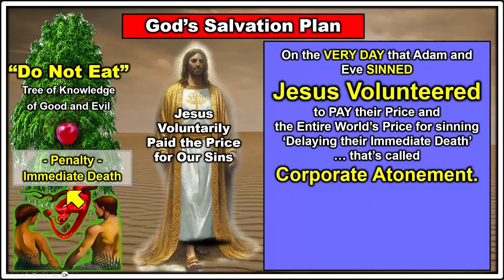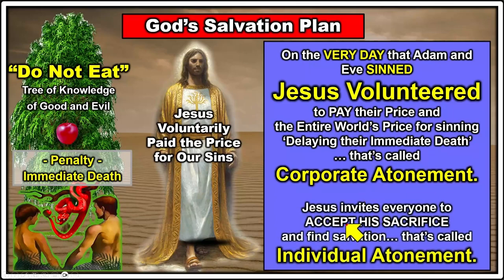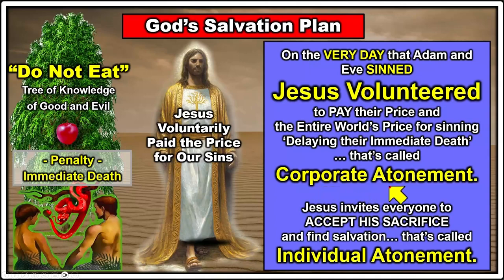Even though God said they would die in the very day they ate from the tree, Jesus volunteered and stepped in the way to pay their price. Jesus invites everyone to accept his sacrifice and find salvation on an individual basis — called individual atonement. Corporate atonement gives everyone the opportunity to consider God's offer of salvation; when they accept it, that's individual atonement. If they reject it, they are lost.